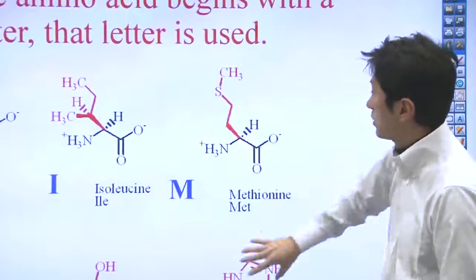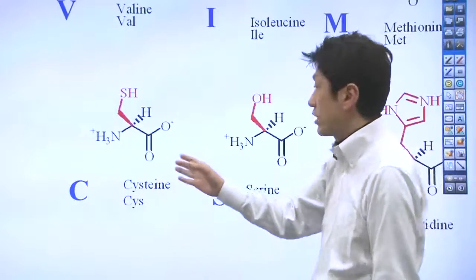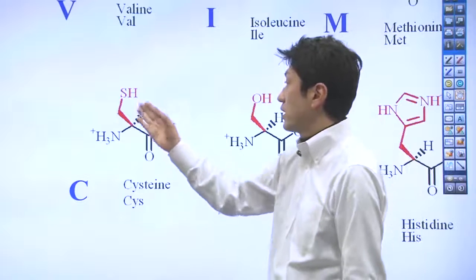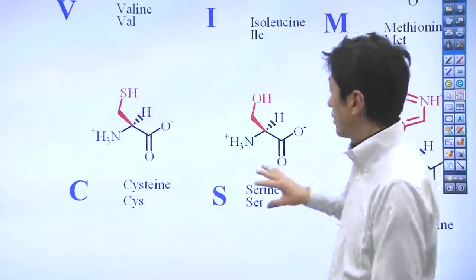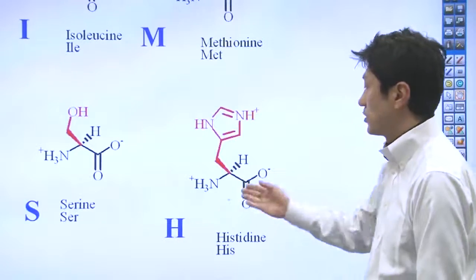Methionine here and cysteine here. If you remember, cysteine is one of the amino acids that uses a sulfur atom. Here's serine, S, and histidine, H.